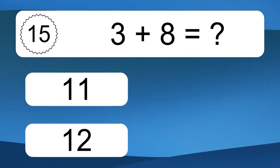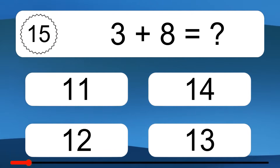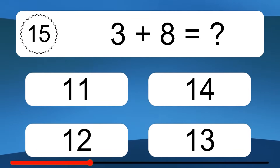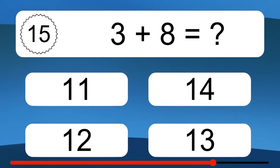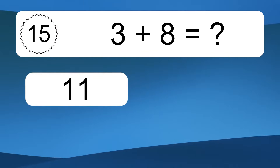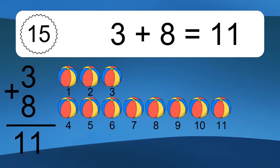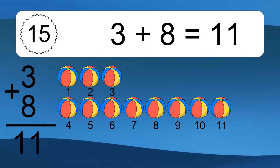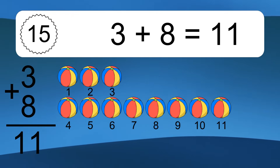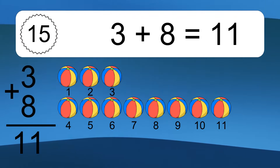3 plus 8 equals what? 3 plus 8 equals 11. Let's count it. 1, 2, 3, 4, 5, 6, 7, 8, 9, 10, 11.